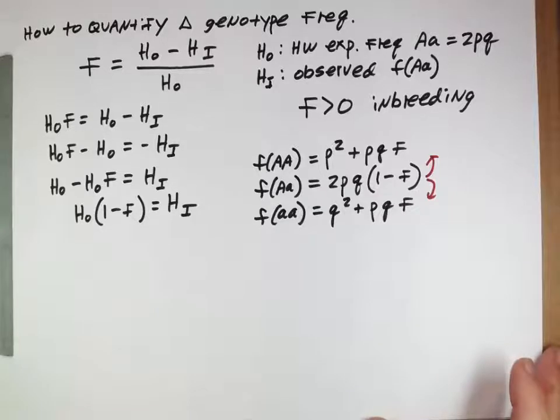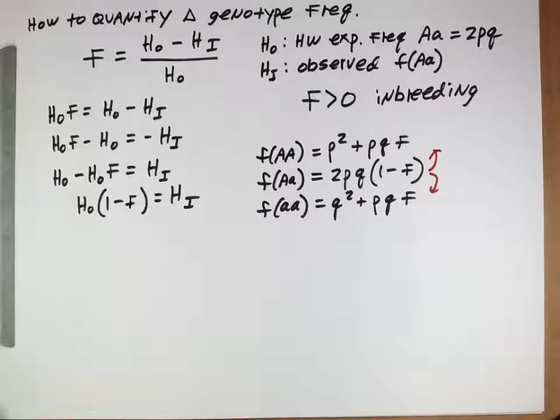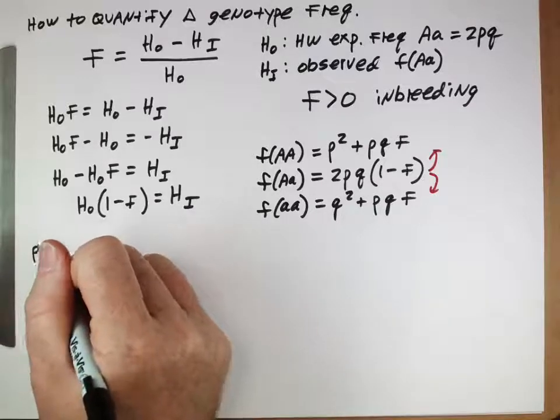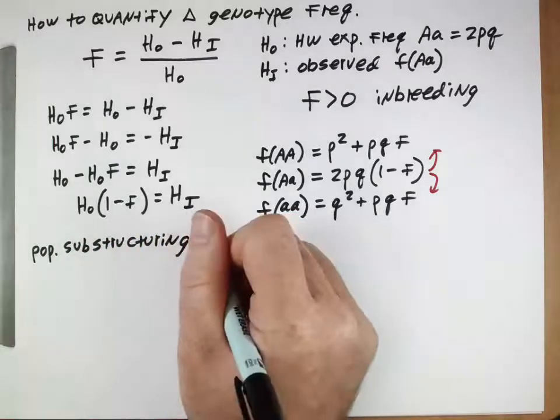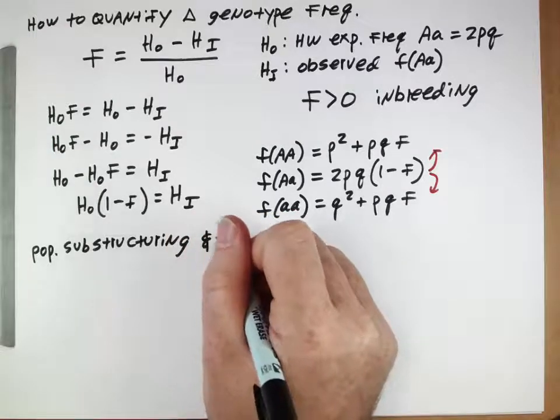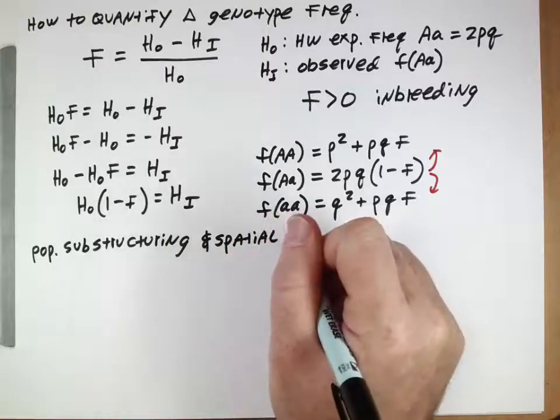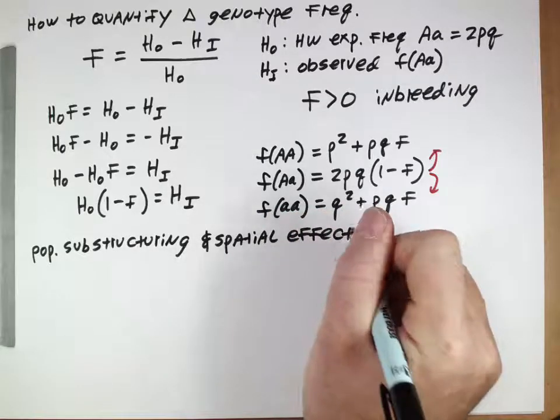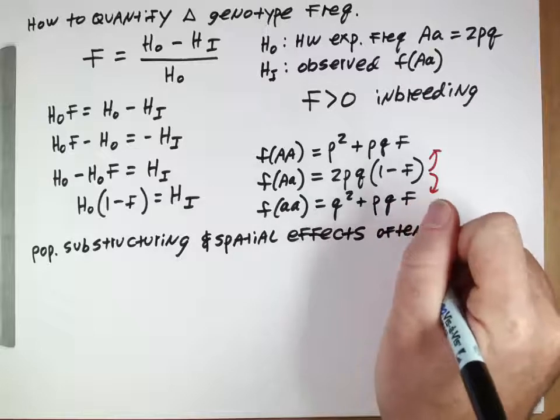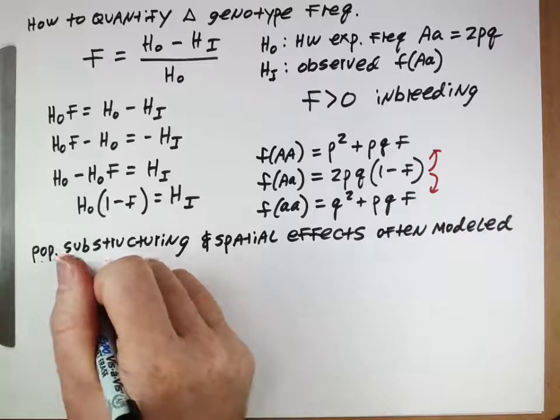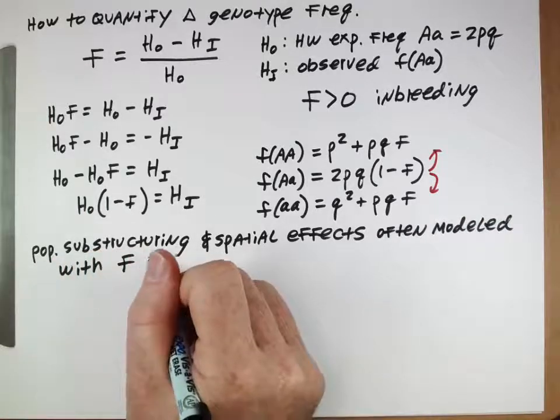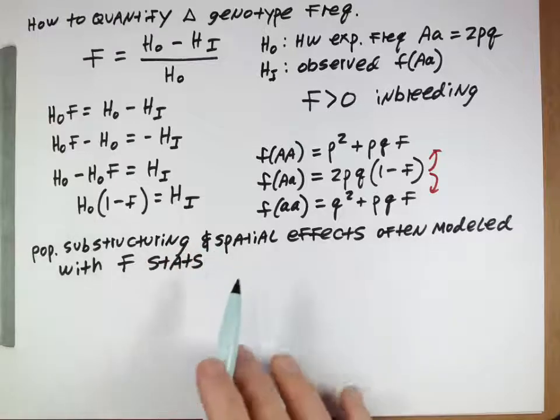These F-statistics are used in a number of cases where things aren't clearly defined as inbreeding. For example, something called population substructuring. That's where you have populations where not every single individual mates with every other individual. There are kind of subpopulations. And spatial effects. This is when, for example, there are different regions, and maybe individuals mate within regions with each other more than they mate across regions.